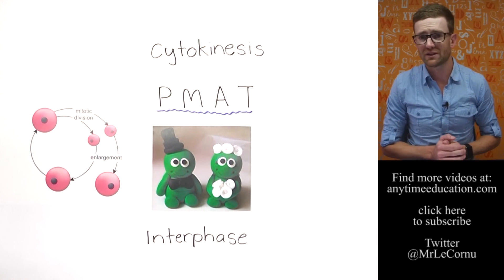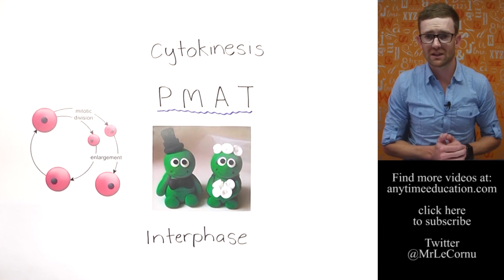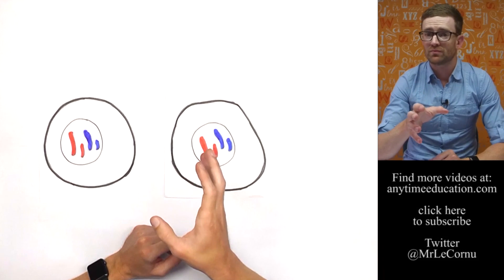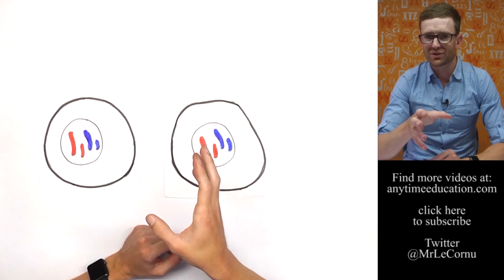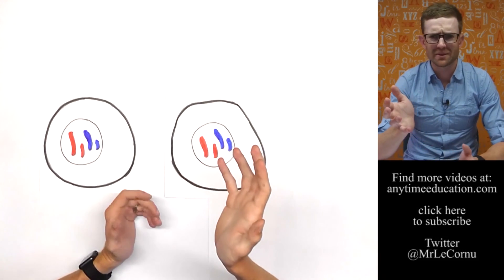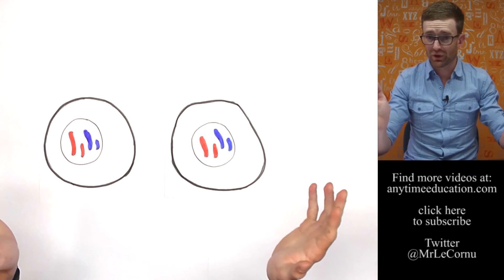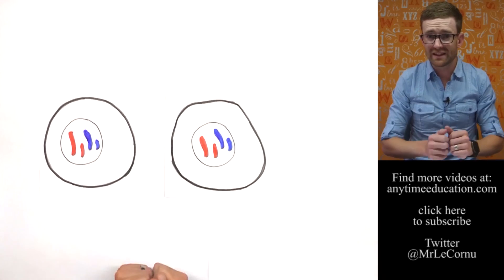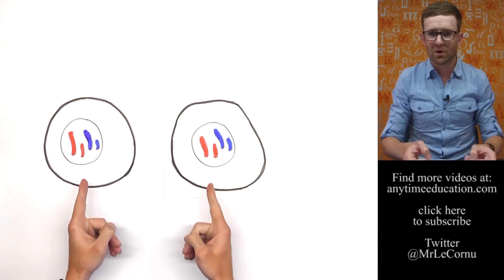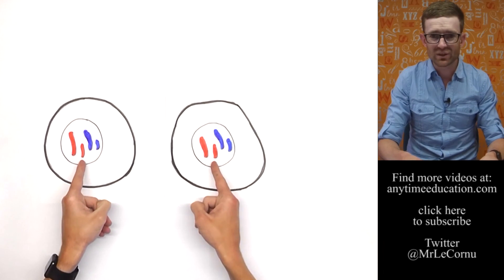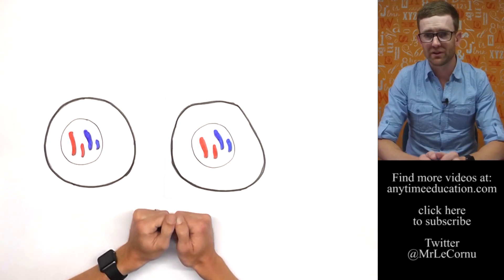Now, I know some of you out there are saying, cool, I understand mitosis, that's great. But my teacher's telling me something about meiosis. What's that? It's another process. The way that you need to think about it is in mitosis, we wanted to produce two identical cells to the parent cell.